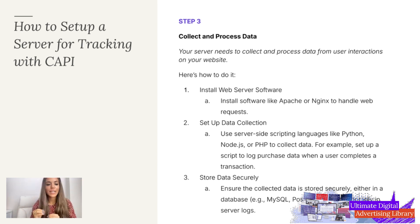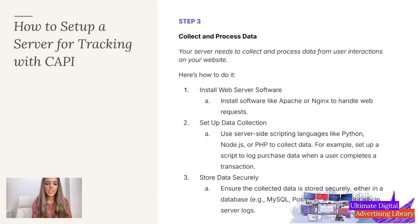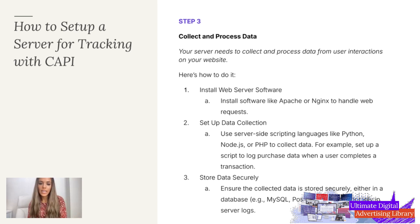You'll use a server-side scripting language — it's very technical but important to understand — like Python or another one, to set up a script to log data. For example, it's going to log purchase data when a user completes a transaction. This back-end tracking can all be set up through ChatGPT if you don't have a developer, so don't be worried. You just want to make sure you're testing that the events are actually working, so that when a user makes a purchase, that data gets sent to and stored securely on the server.